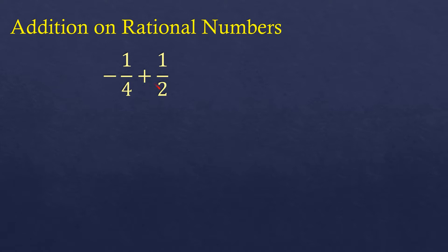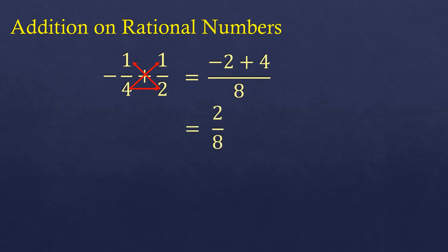We're going to cross-multiply and also multiply the denominators. So two times negative one is negative two, four times one is four, and at the denominator, four times two is eight. Then we combine the numerators: negative two plus four is two. Copy the denominator, so two-eighths, which reduces to one-fourth by dividing top and bottom by two.